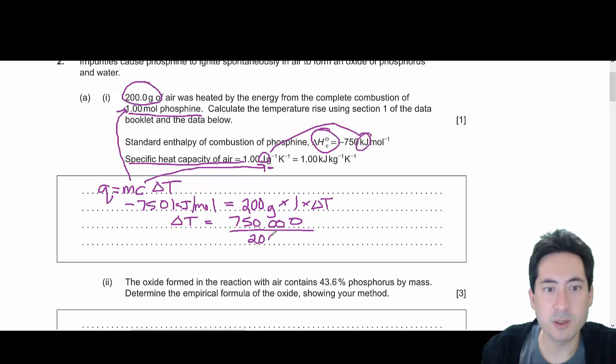And that's divided by 200. So just check all your units are the same. And if you halve that, that'll give you 3,750.